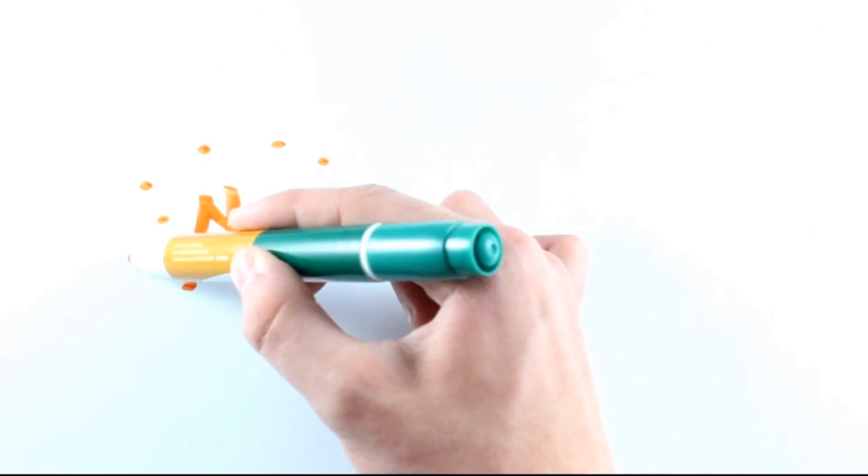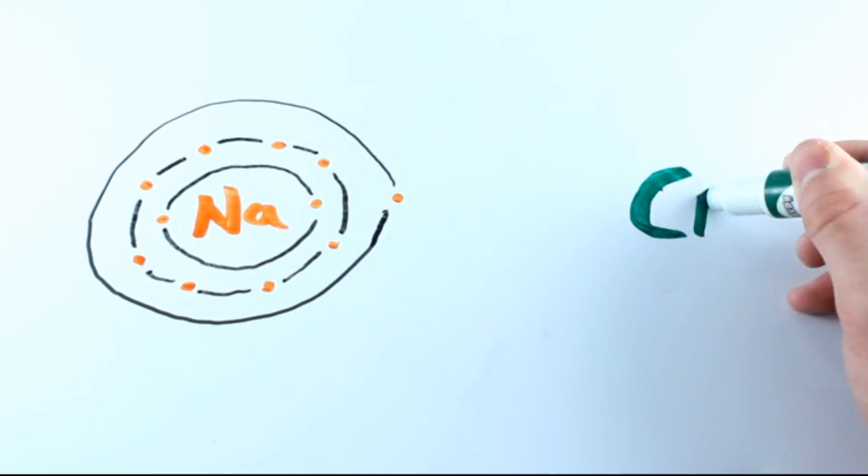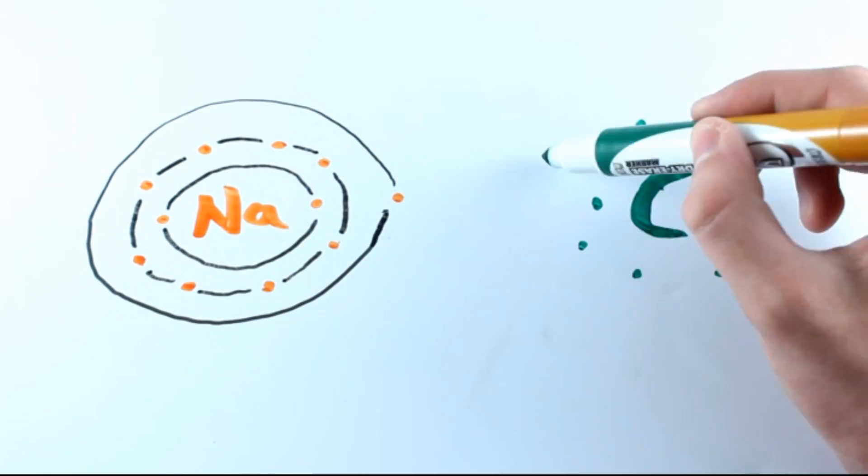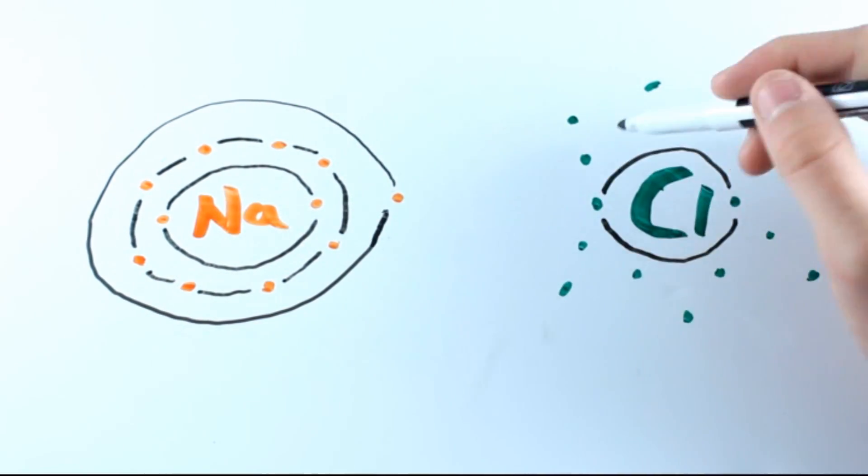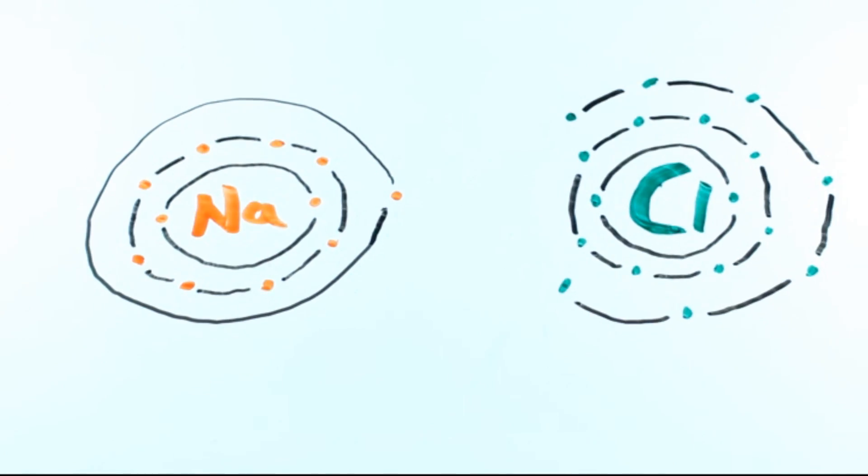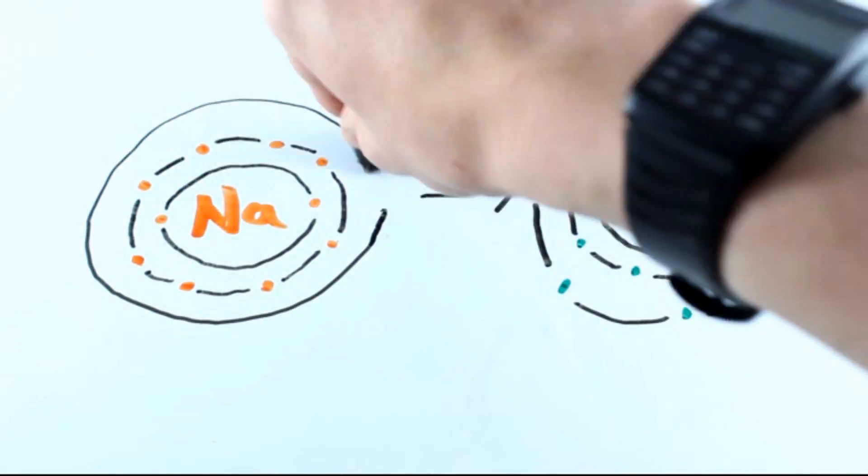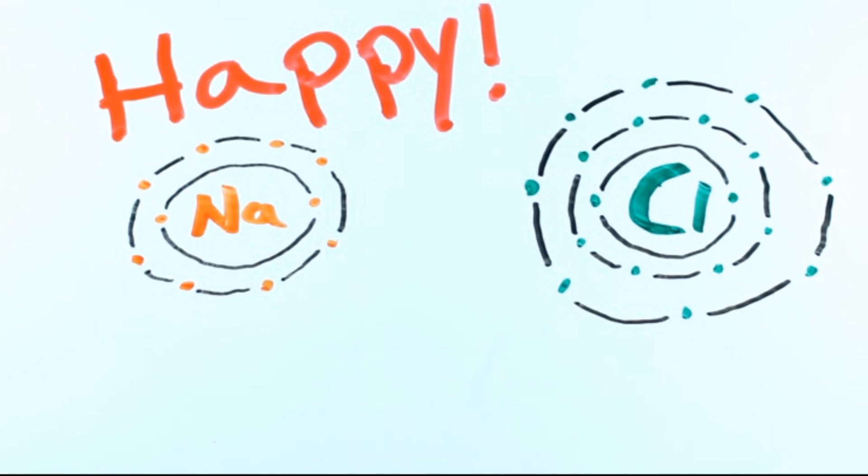If you're wondering why the sodium atom is okay with chlorine stealing its electron, you need to remember that these are just the valence electrons. These are just the outer shell. Sodium has more electrons in its inner shells and they are full, so sodium is happy.